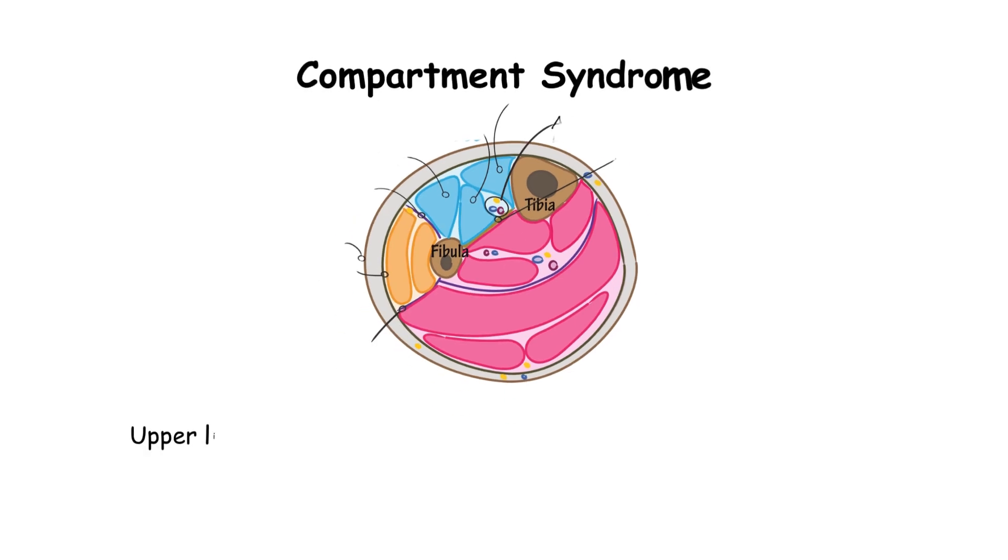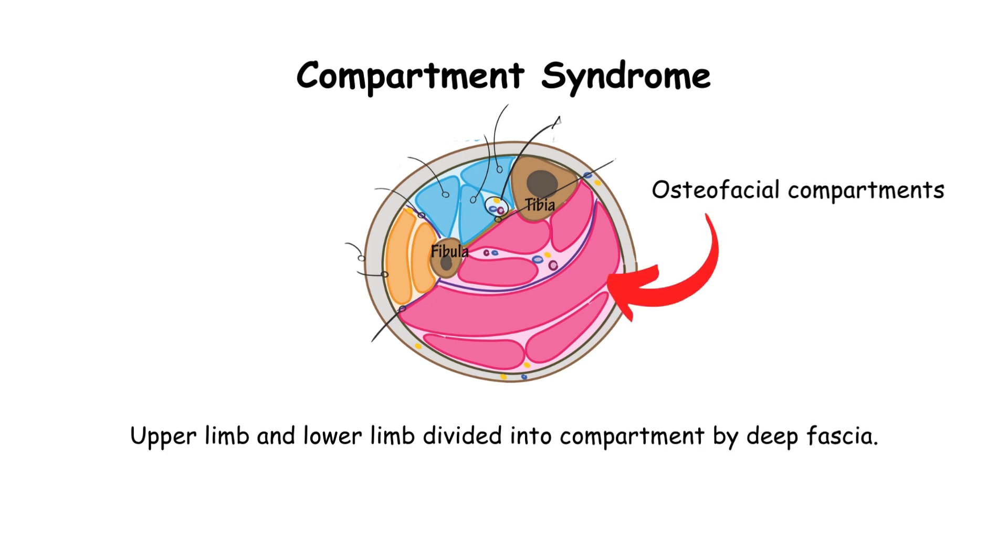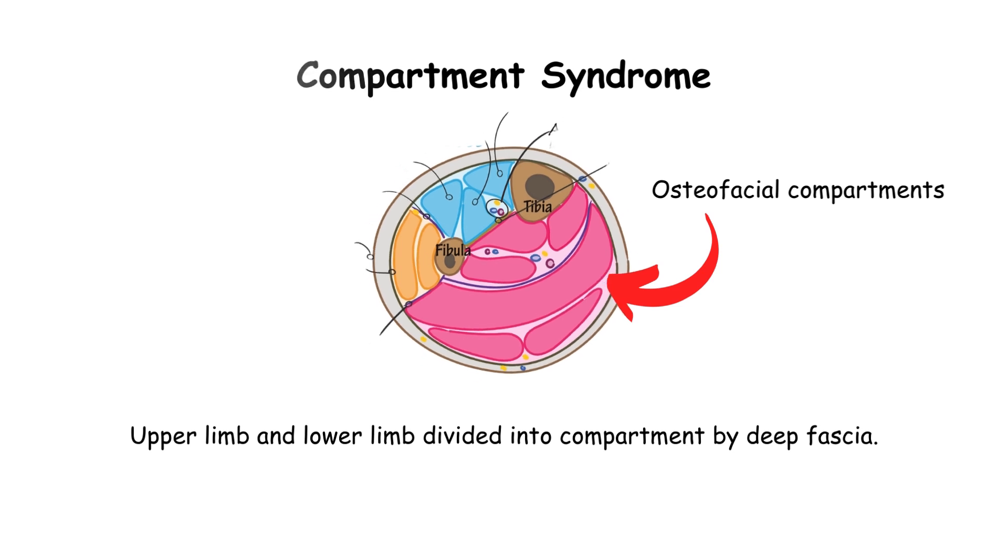The upper limb and lower limb are divided into compartments by deep fascia. These are called osteofascial compartments. These fascial layers cannot be stretched, so they are non-compliant.